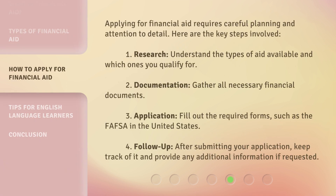Applying for financial aid requires careful planning and attention to detail. Here are the key steps involved. 1. Research: understand the types of aid available and which ones you qualify for. 2. Documentation: gather all necessary financial documents. 3. Application: fill out the required forms, such as the FAFSA in the United States.